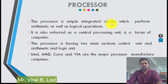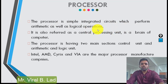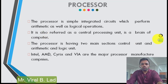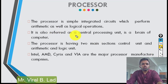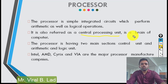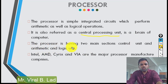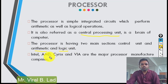A processor is a simple integrated circuit which performs arithmetic and logical operations. It is also referred to as the central processing unit. It can be considered the brain of the computer — without a processor, we can't do anything. The processor has 2 main sections: the arithmetic unit and the logic unit.